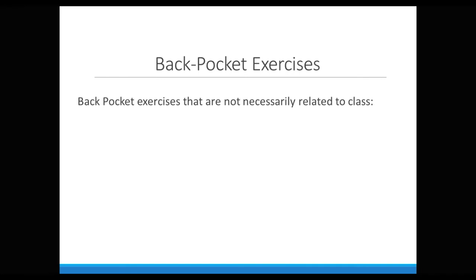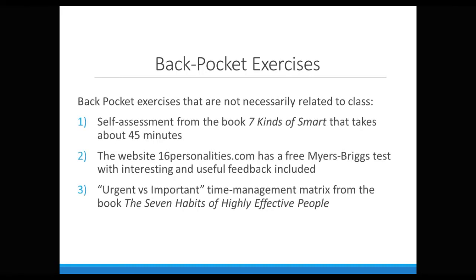There are also back pocket exercises that don't have to be related to class at all. I have students do a 90-question self-assessment from the book Seven Kinds of Smart. It takes about 45 minutes to complete and process, and the questions only require a yes or no answer. The results give students a good idea of what kinds of intelligences are dominant for them — it challenges the idea that intelligence is only verbal and mathematical. There's spatial intelligence, interpersonal intelligence, musical intelligence, and more.